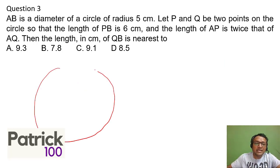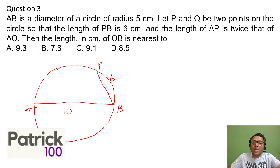Next, AB is the diameter of radius 5. In geometry, I normally prefer drawing, okay, because that gives a better picture and reduces the mistakes. P, Q are two points on the circle. It said PB is 6, so let me put PB as 6, and length AP. So AP is twice of AQ, so AQ will be from here.